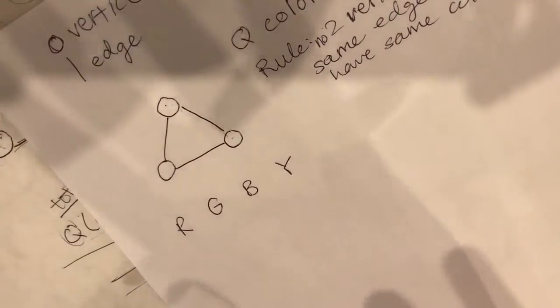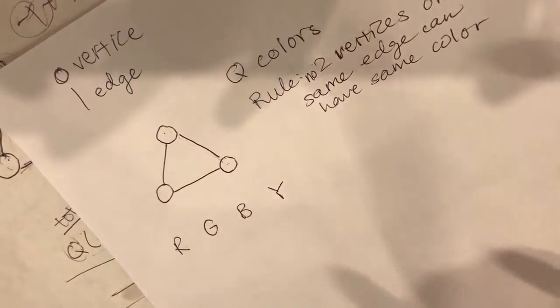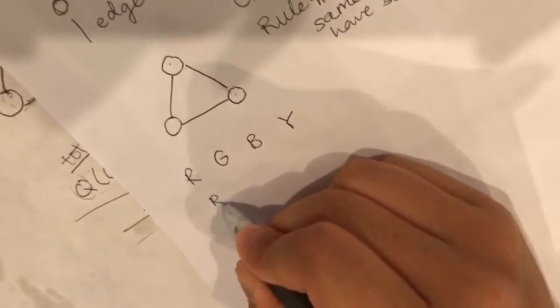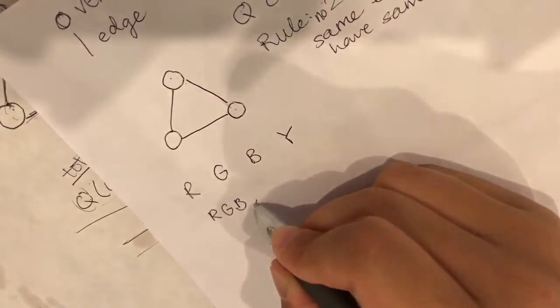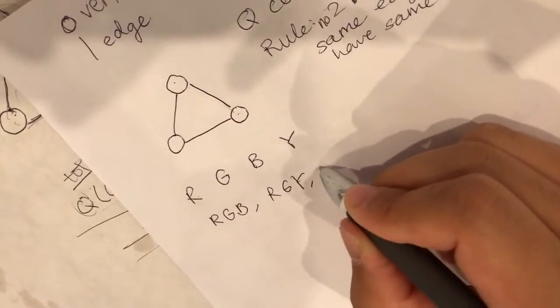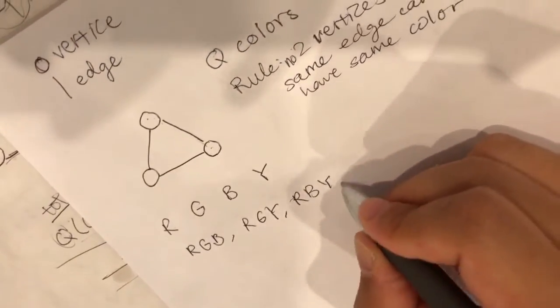Now we want to figure out how many different ways total can we color the vertices. So one way could be to use red for one, green for the other, blue for the last one. Or we could use red, green, yellow. Or we could do red, blue, yellow, and so on.